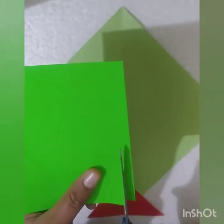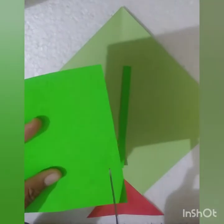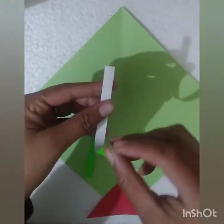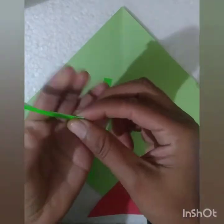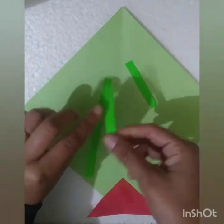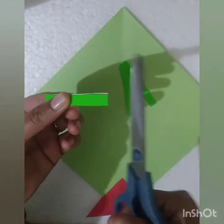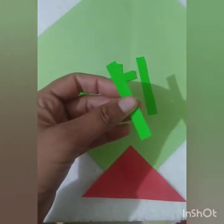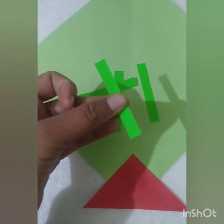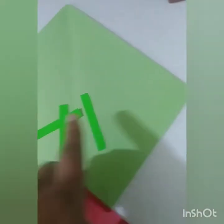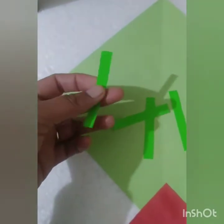Now children, take an origami sheet and cut it into a rectangle shape. Next children, paste the rectangle shape on the left and right corners with Fevicol, like this.